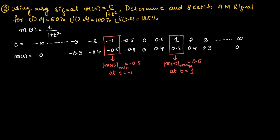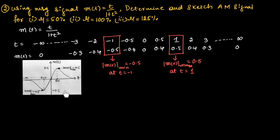We have the minimum value for m(t) as −0.5 at t = −1, so m(t)_min = −0.5 at t = −1. This is the sketch of m(t), the message signal. m(t) is maximum at t = 1 with value 0.5, and m(t) is minimum at t = −1 with value −0.5.